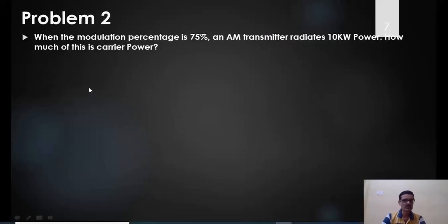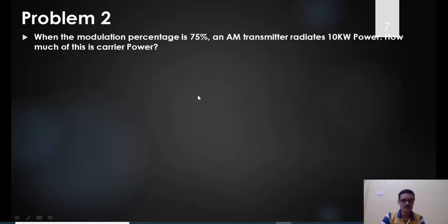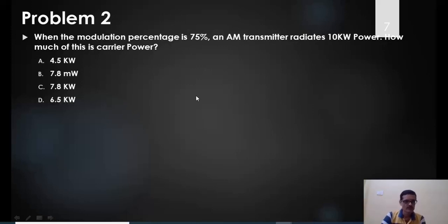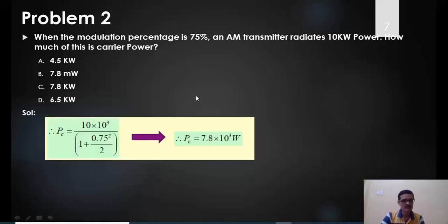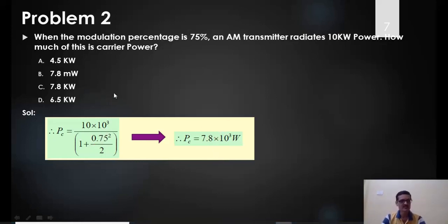Example 2: When the modulation percentage is 75%, an AM transmitter radiates 10 kilowatts of total power. How much of this is the carrier power? Using PC = PT / (1 + μ²/2), with PT = 10 kW and μ = 0.75: substituting these values gives PC = 7.8 kilowatts. The answer is C.